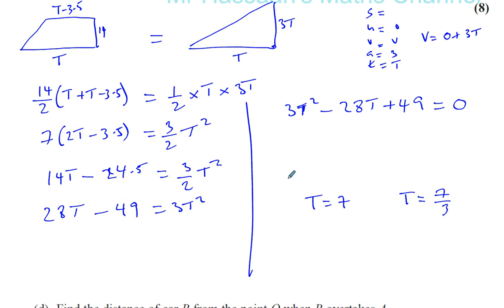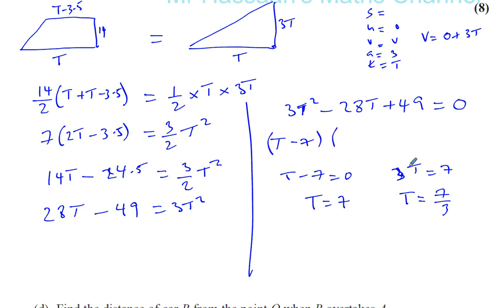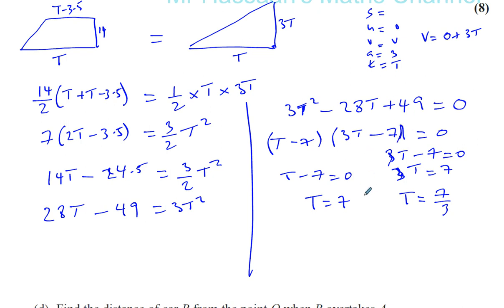Working backwards: T equals 7 means (T minus 7) equals 0, and T equals 7/3 means 3T equals 7, so (3T minus 7) equals 0. Therefore the factorized form is (T minus 7)(3T minus 7) equals 0. That's how you can show the factorization. You should know you can factorize by splitting the middle term, but using the calculator is a nice way to do it in an exam.